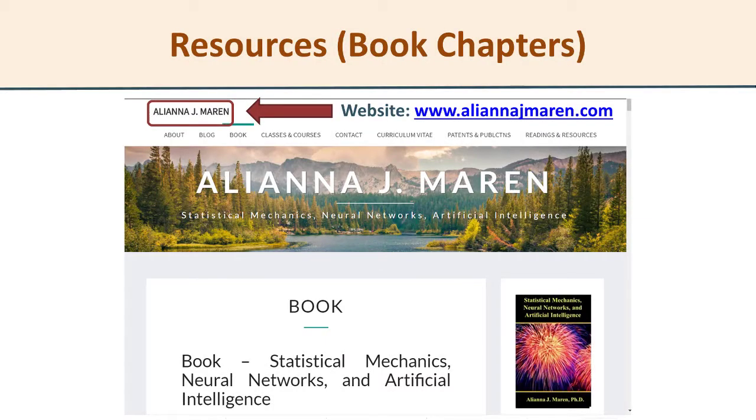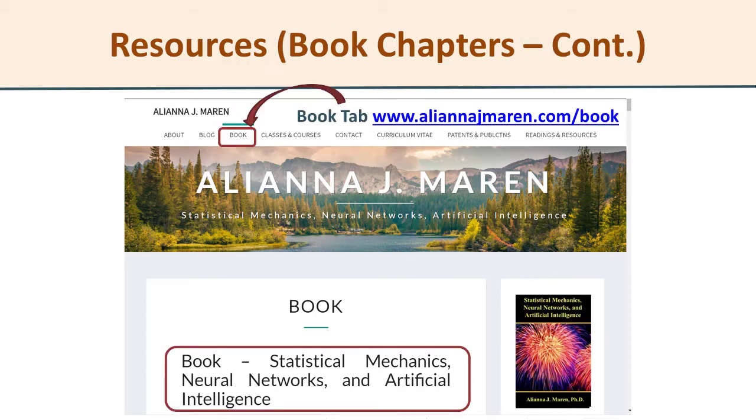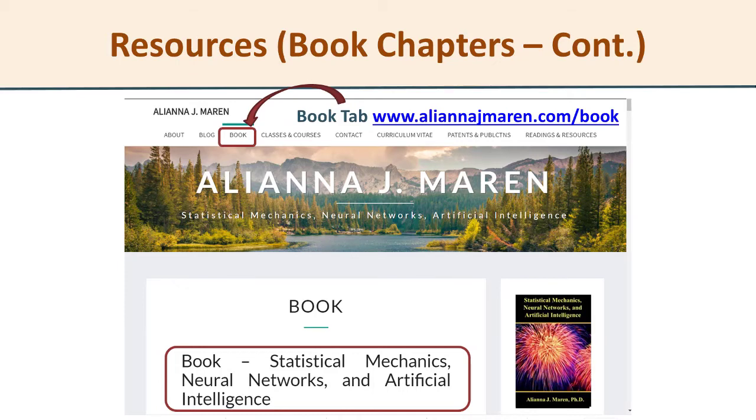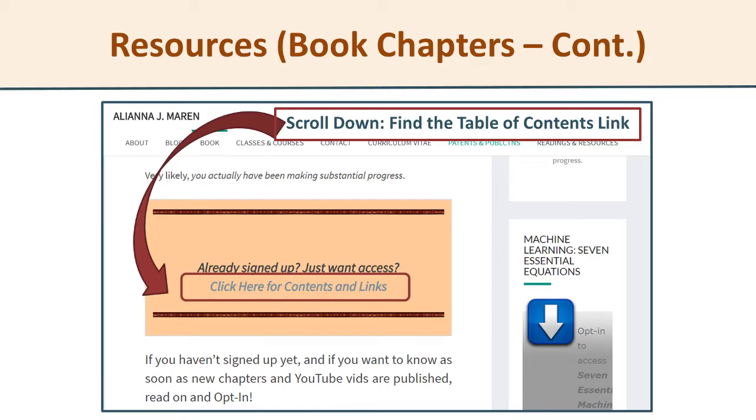I've got a book in progress. It has all the equations that I'm referencing here. So if you want a nice hard copy or digital copy of everything worked out in textbook style, please go to my website alianajmorren.com. Please use the book tab that's in the menus. It'll take you to a page where shortly after the top there is an orange looking box. Find the link there that takes you to the table of contents. All of the material in this backpropagation series is in part two.